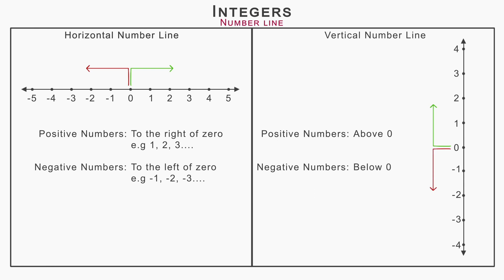On both the number lines, we have positive numbers, negative numbers, and zero. We define integers as a group of positive numbers, negative numbers, and zero.